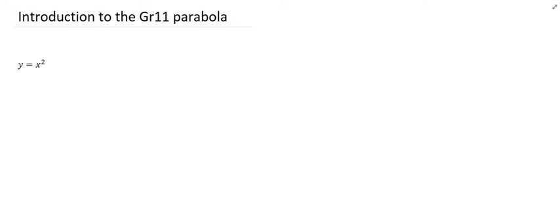y equals x squared. The important part that makes something a parabola is the x squared part. Please note that this is very similar to an exponential graph. The main difference is that an exponential graph has the x in the exponent, whereas x is the base for a parabola. So please make sure that you do not confuse those two.